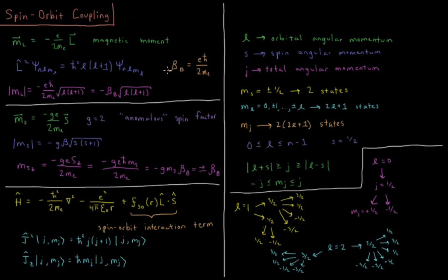Note that from the Zeeman effect video, the Bohr magneton β_B equals eħ over 2 times mass of the electron. So our magnetic dipole moment from orbital angular momentum is going to be negative Bohr magneton times √(L(L+1)).